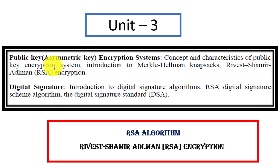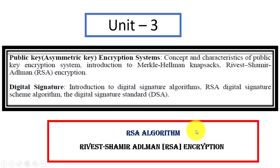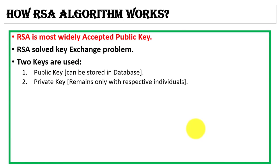In a previous video we covered public key encryption, that is asymmetric key cryptography, where we discussed symmetric and asymmetric keys and the difference between them. Now in asymmetric key cryptography we have RSA algorithm, so in this video we will see what RSA algorithm is with an example. RSA is the most widely accepted public key algorithm and it solved the key exchange problem faced in symmetric key cryptography, where sender and receiver use the same keys for encryption and decryption.